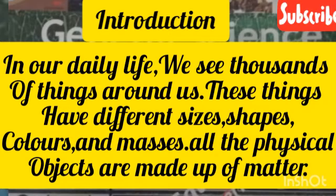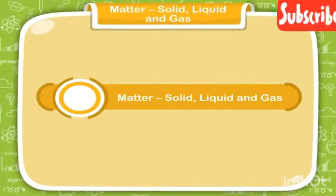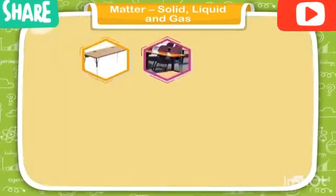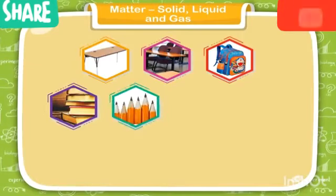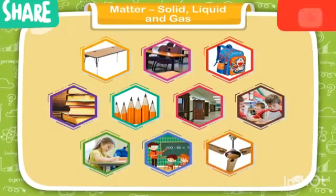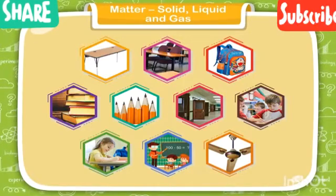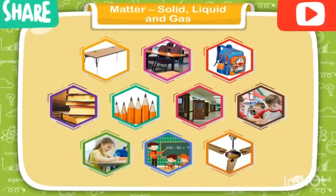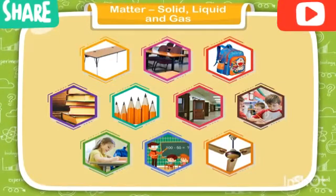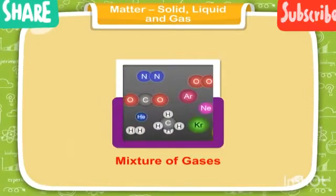All the physical objects are made up of matter — solid and liquid. If you look around your classroom you will see many things such as tables, chairs, bags, books, pencils, doors, boys, girls, teachers, fans. Even though we cannot see air, it is present all around us. All these things are called matter. Everything around you is matter.